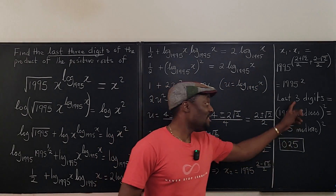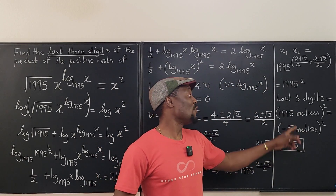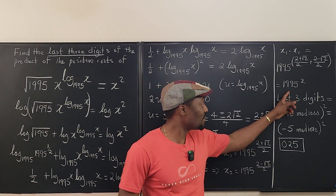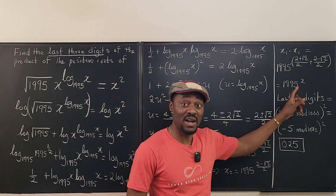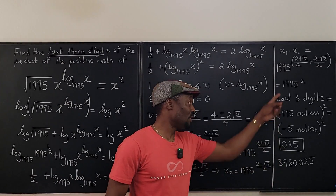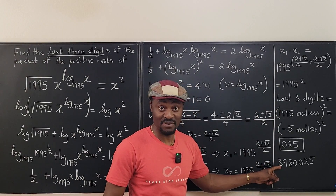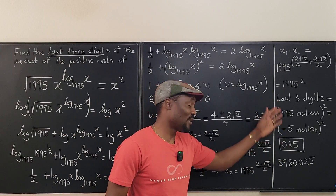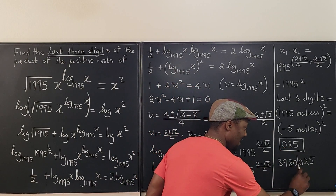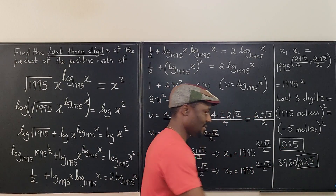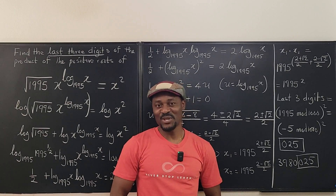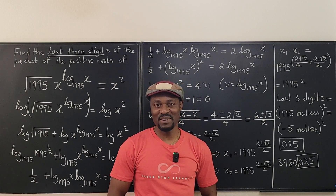You could also just multiply 1995 by 1995 directly to confirm — this is the safer approach if you prefer, rather than using modular arithmetic. Either way, you get the same last three digits: 025. Never stop learning — those who stop learning stop living. Bye bye!